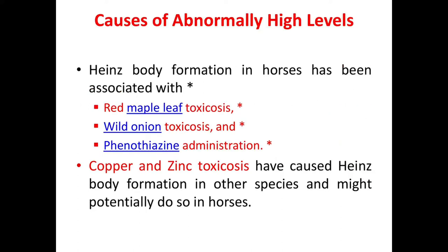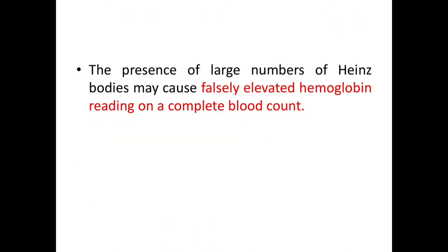Now let's see the causes of abnormally high levels of Heinz bodies. Heinz body formation in horses has been associated with red maple leaf toxicosis, wild onion toxicosis, and phenothiazine administration. Copper and zinc toxicosis have caused Heinz body formation in other species and might potentially do so in horses. Onion toxicosis leads to Heinz body formation in calves, and ethylene glycol toxicity is also a cause of Heinz body formation.